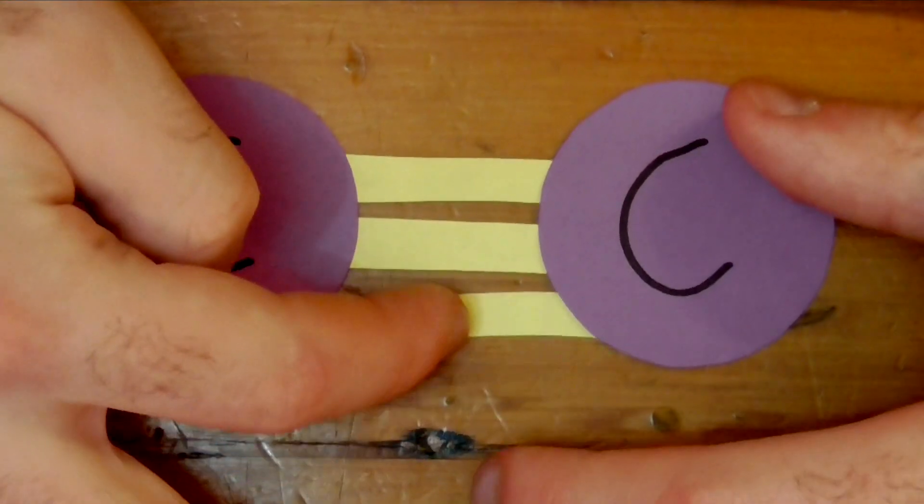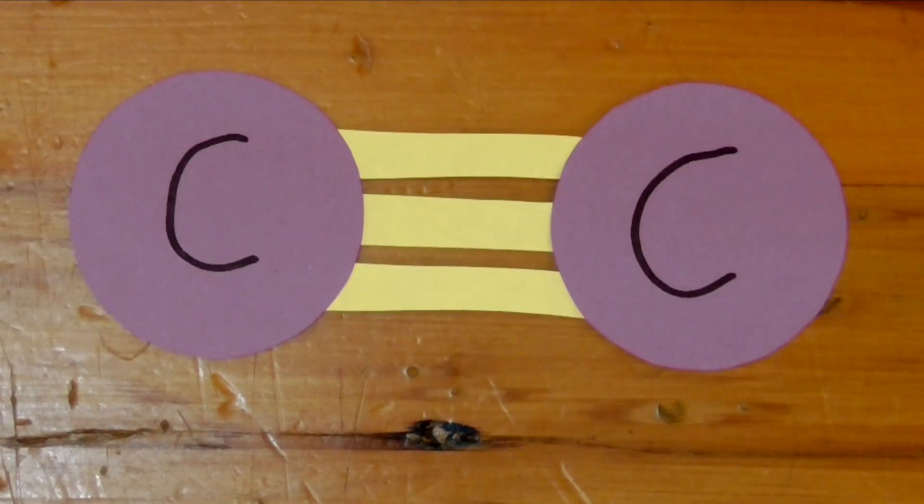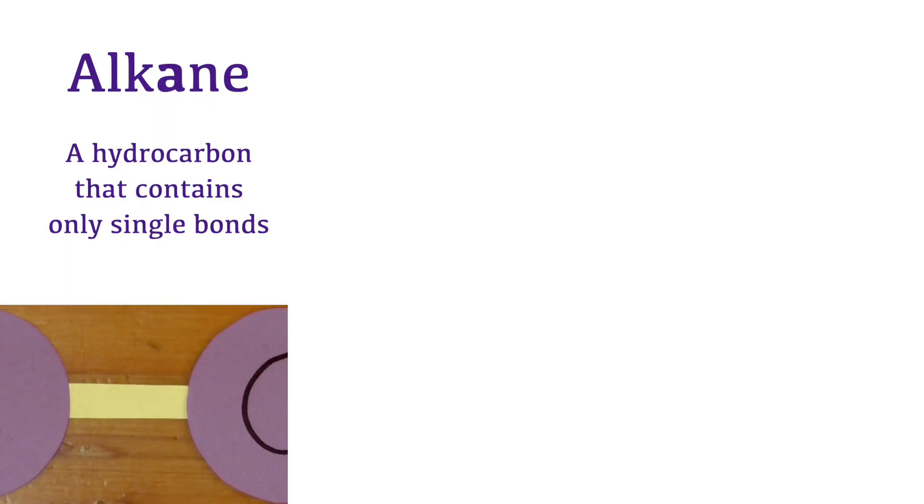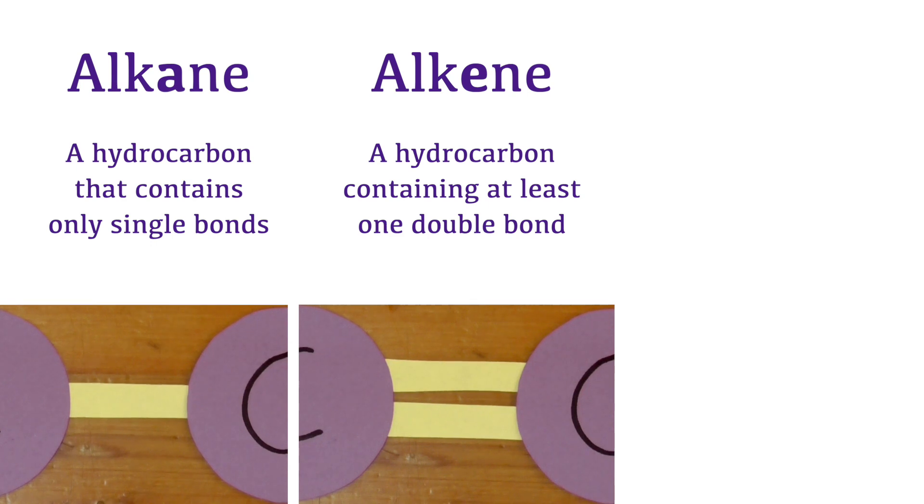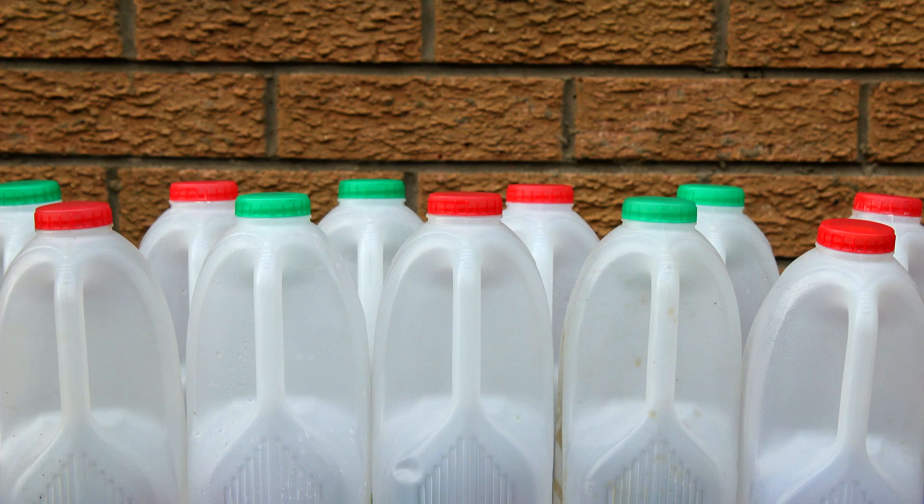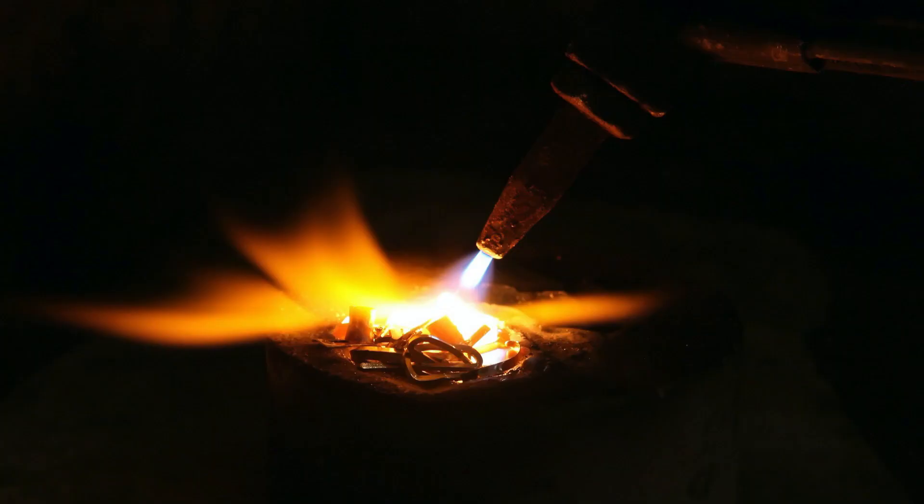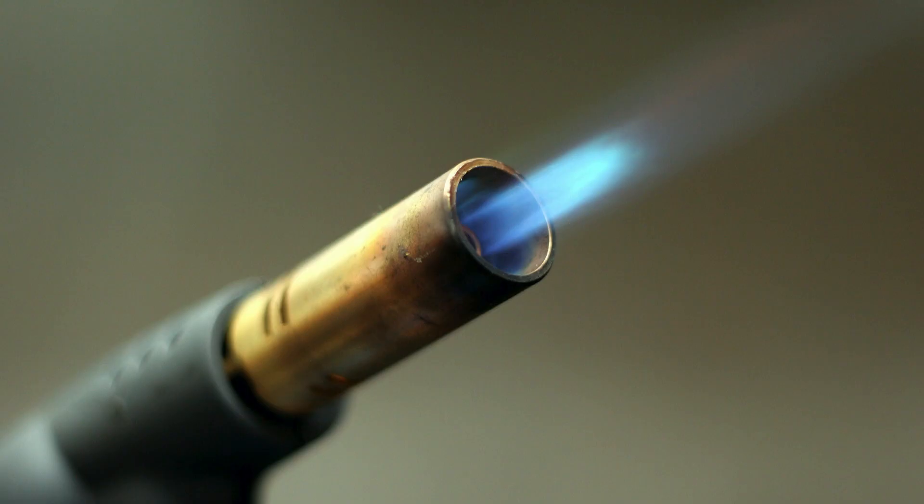The hydrocarbons we have seen so far only contain single bonds, and they are known as alkanes. Hydrocarbons containing double bonds are called alkenes. These are the molecules that form the building blocks of plastic. Hydrocarbons containing triple bonds are known as alkynes. These are less common than alkenes and release a lot more energy when they are burned. They can be found in high power applications like the ethane used in this blowtorch.